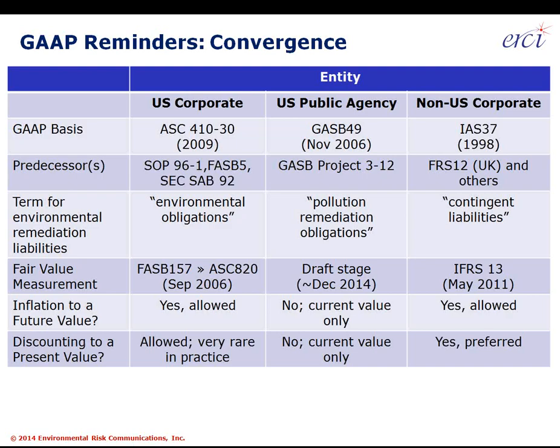U.S. public agencies are working under GASB 49, which is roughly a 70-page document available from the GASB.org website for free. It's the key standard document. Before it was finalized, it was called GASB Project 3-12. The term of art has been Pollution Remediation Obligations — PROs for short. We've used that term for 10 years now, and we've found it's important to call them obligations because it gets a mindset and helps with training, tools, and communications.